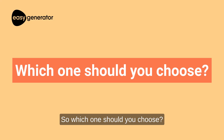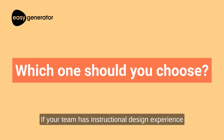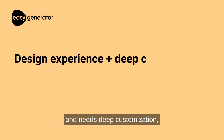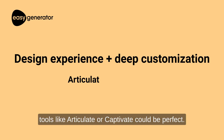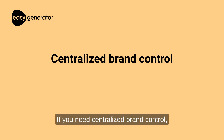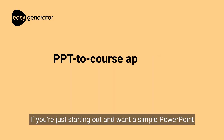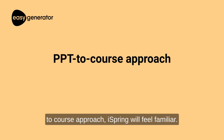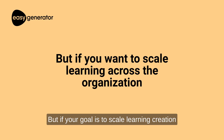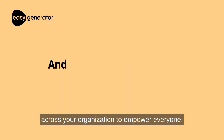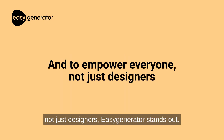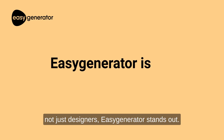So, which one should you choose? If your team has instructional design experience and needs deep customization, tools like Articulate or Captivate could be perfect. If you need centralized brand control, Elucidate might fit the bill. If you're just starting out and want a simple PowerPoint-to-course approach, iSpring will feel familiar. But if your goal is to scale learning creation across your organization to empower everyone, not just designers, Easy Generator stands out.